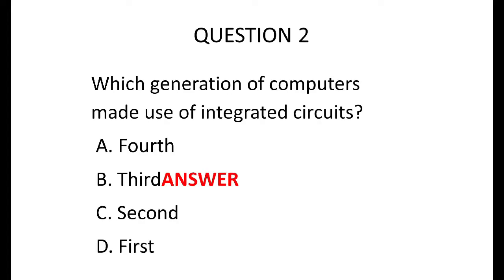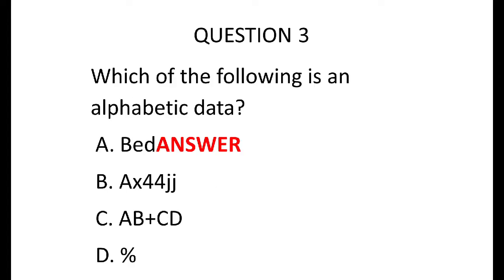Question two says: which generation of computers made use of integrated circuits? That is the third generation. The first generation used vacuum tubes. The second generation made use of transistors. And the third generation made use of integrated circuits.